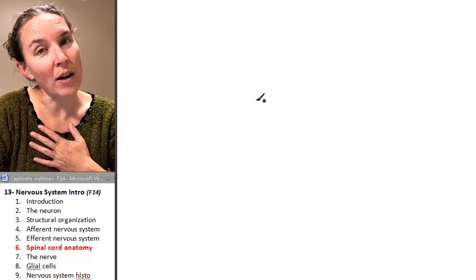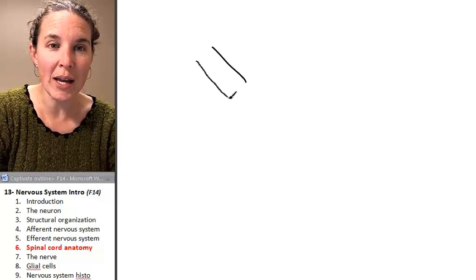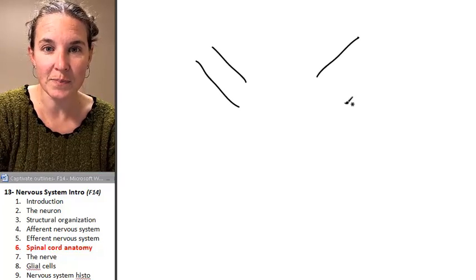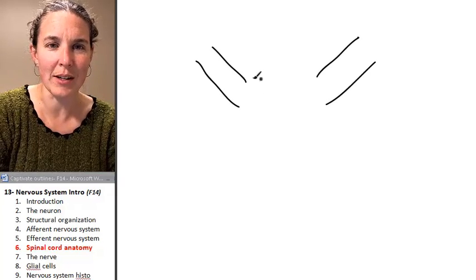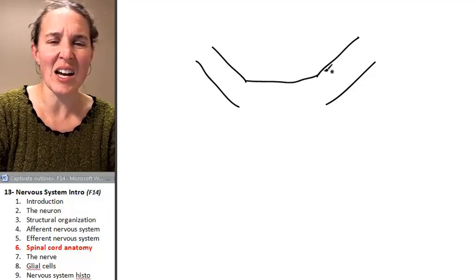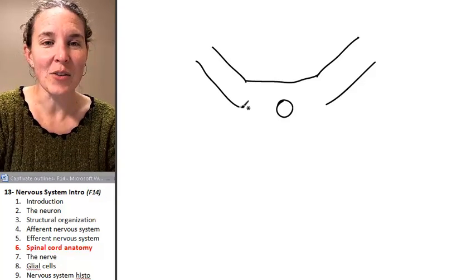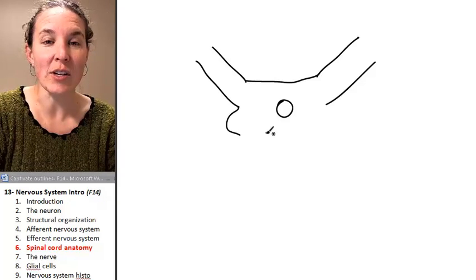When I draw my spinal cord, I start with those two little twanging like ear things. Of course, little ear things, right? And there's kind of a line that connects them. There's a hole in the middle. Guess what that thing is called? I love it when anatomy is easy. That's the central canal.